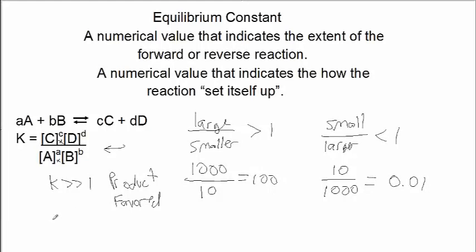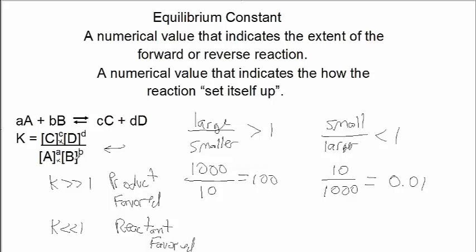In the other case, if the equilibrium constant is some number less than 1, it is a reactant-favored reaction, because the denominator is a larger number than the numerator, indicating that the concentration of the reactants is larger than the concentration of the products.